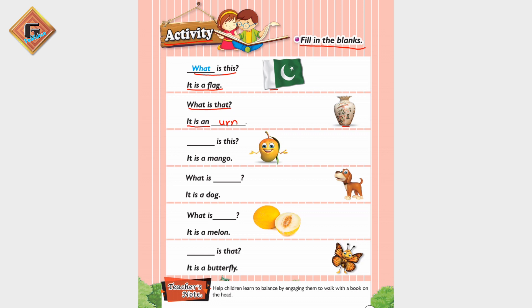We have written the answer: 'It is an urn.' 'Dash is this' — so this is the question we have written: 'What is this?' — 'What is this?' So the answer is 'It is a bangle.'